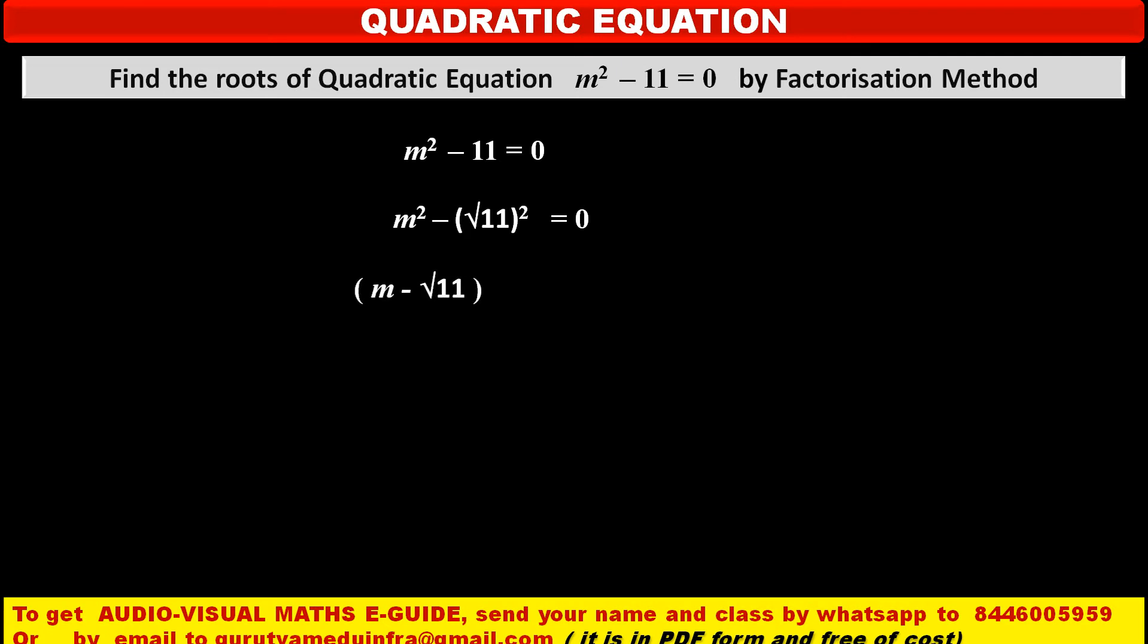So by factorizing this we get (m - √11) in one bracket times (m + √11) in second bracket is equal to 0 on the right hand side.